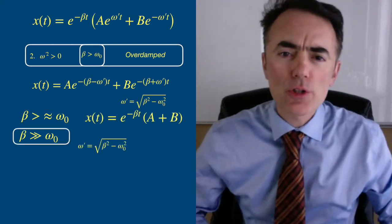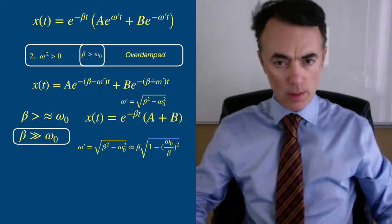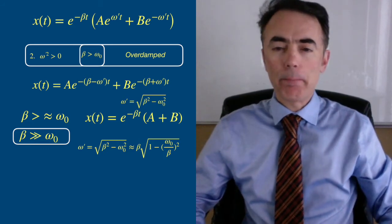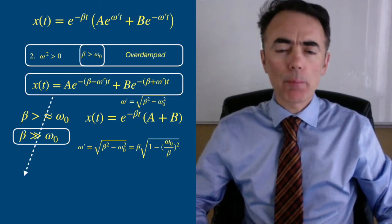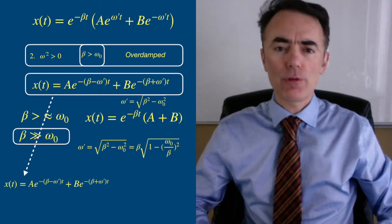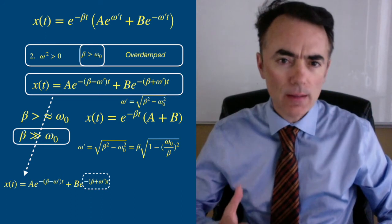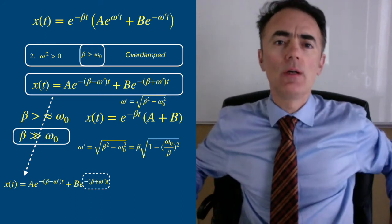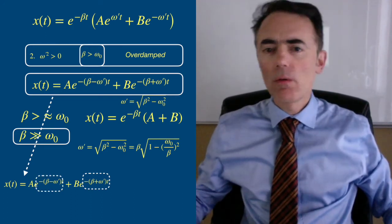If beta is much larger than omega naught, then omega prime is basically beta. This is a strong damping. The second term is much more negative than the first one. The second term then decays much faster than the first one, so the first one dominates.